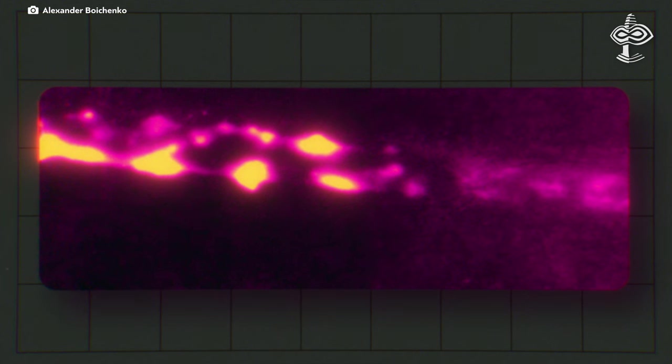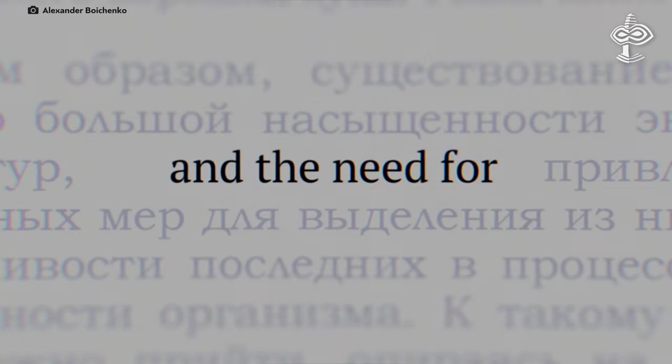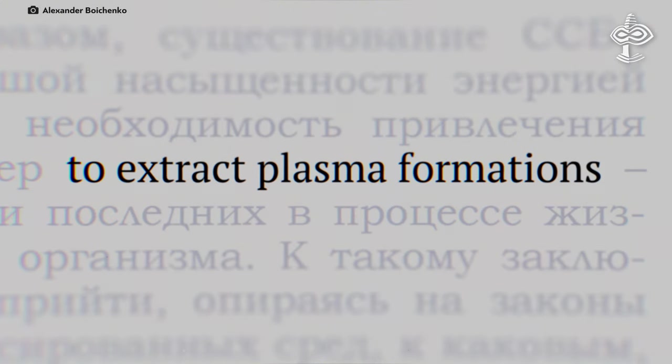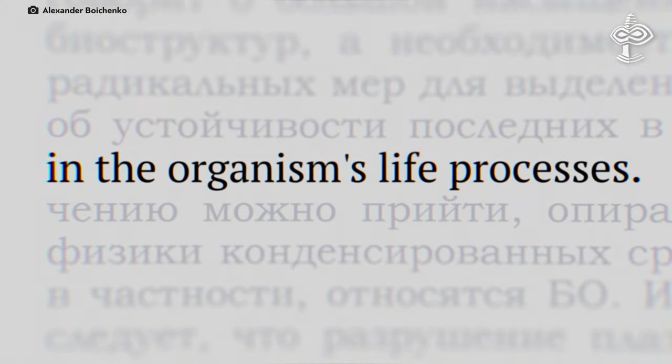It should be noted that none of the 50 photographs showed torches with plasmoids, characteristic of freestanding plasma formations. And the need for drastic measures to extract plasma formations from them indicates the stability of the latter in the organism's life processes.